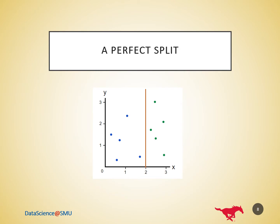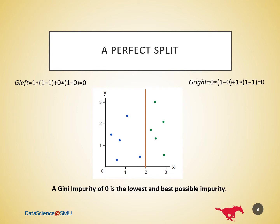Let's go back to the perfect split we had. What are the Gini impurities of the two branches after the split? The left branch has only blues, so its Gini impurity equals 0. The right branch has only greens, so Gini impurity equals 0. Both branches have 0 impurity. The perfect split turned a dataset with 0.5 impurity into two branches with 0 impurity. A Gini impurity of 0 is the lowest and best possible impurity — it can only be achieved when everything is the same class.